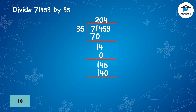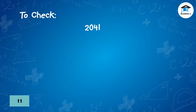145 minus 140 is 5. Bring down 3. Divide 53 by 35 is 1. Multiply: 1 times 35 is 35. Subtract: 53 minus 35 is 18. The quotient is 2,041 and the remainder is 18.